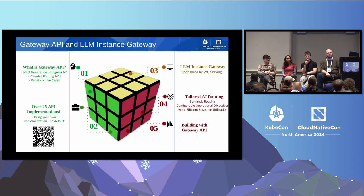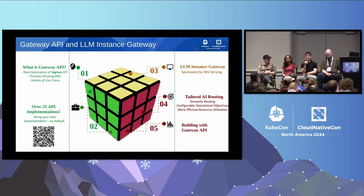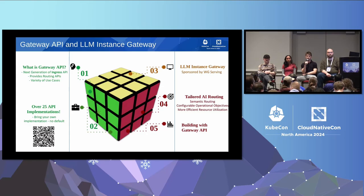Next, I'm going to talk about the LLM Instance Gateway and its intersection with Gateway API. The project is officially sponsored by Working Group Serving, and it has an intersection with Gateway API — we'll talk about how it's built with it in a moment. Essentially, what this project does is tailored AI routing: you could do semantic routing by looking at the body, and there is an option to configure operational objectives like latency for inference requests.